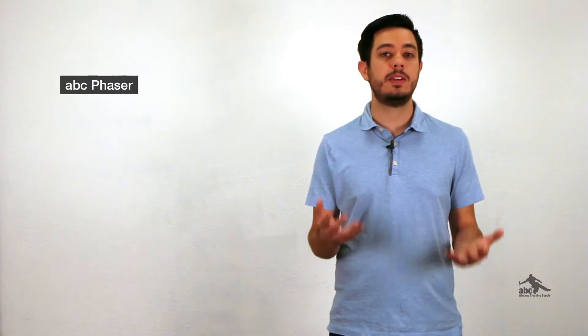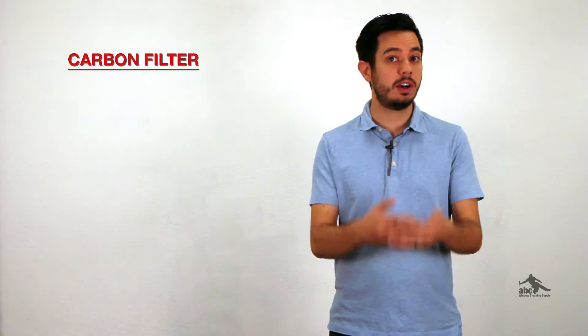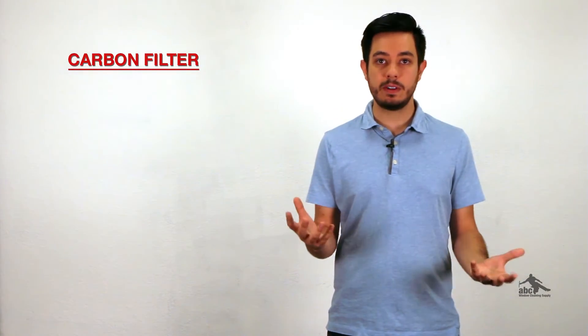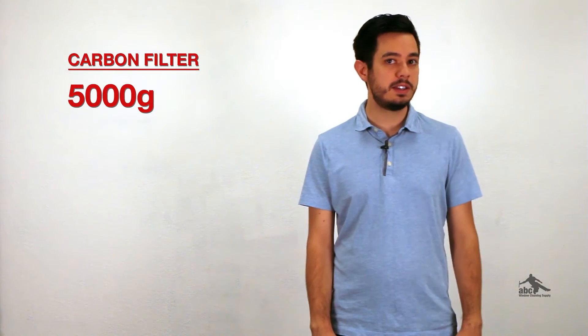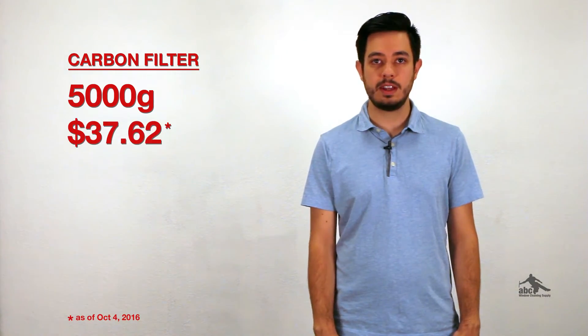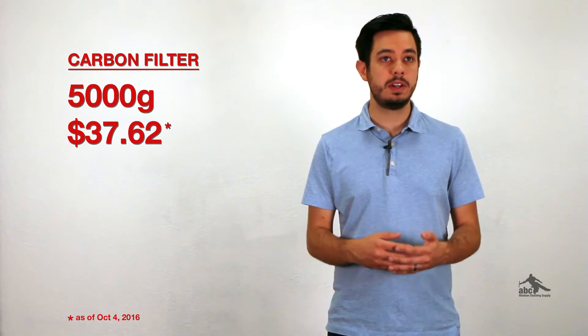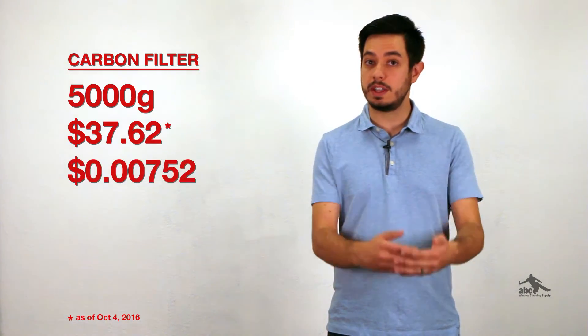Let's switch over to a multi-stage system. For this example we're going to be talking about the ABC Phaser. The first filter in the phaser is going to be the carbon filter. The carbon filter is rated for 5,000 gallons. Current replacement cost is $37.62. If you divide that out you'll come to 0.00752.